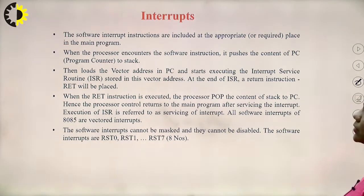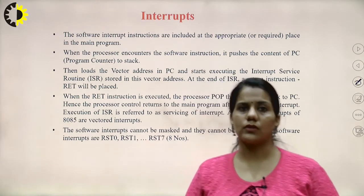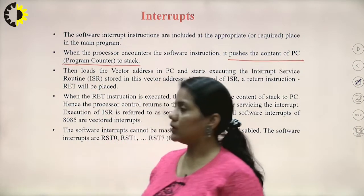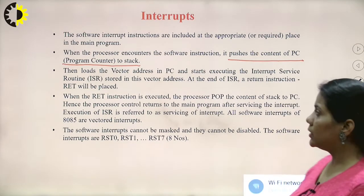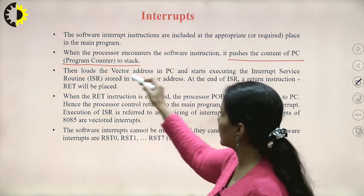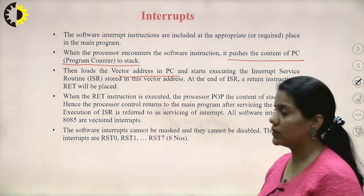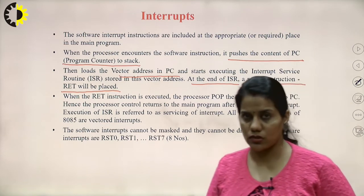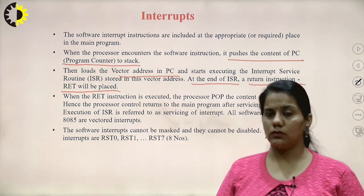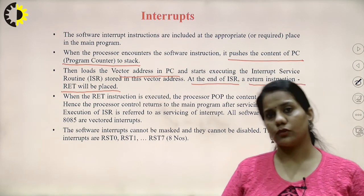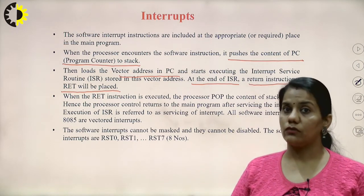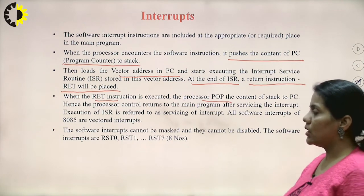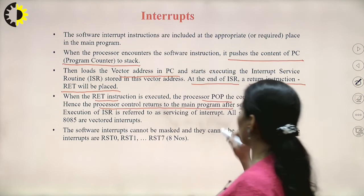The software interrupt instructions are included at the appropriate place in the main program. When the processor encounters the software instruction, it pushes the contents of the PC to the stack. Then it loads the vector address into the PC and starts executing the interrupt service routine stored at that vector address. At the end of the ISR, a return instruction RET is placed, similar to the case of a CALL instruction, and the contents of the stack are popped out and returned to the program counter. The program counter then contains the next memory location of the main routine from where it left off.